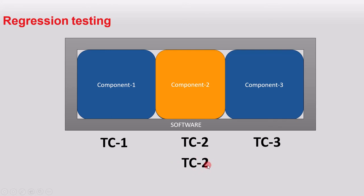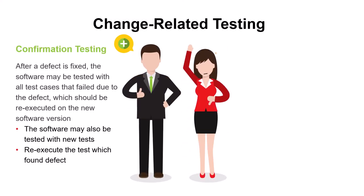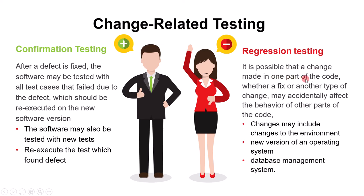The answer is no, because the changed Component 2 can impact Component 1 or Component 3 since they are connected with each other. Therefore, along with test case 2, we have to run test case 1 and test case 3. The technical definition of regression testing: a change made in one part of the code, whether a fix or another type of change, may accidentally affect the behavior of other parts of the code. Changes may include changes to the environment, such as a new version of an operating system or database management system.